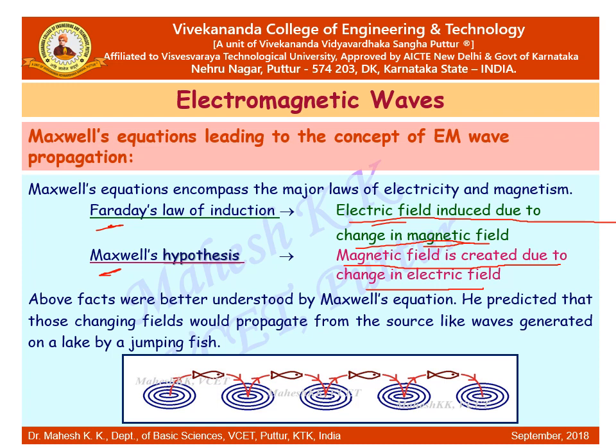Imagine a lake and a fish jumping in it. When the fish jumps into the lake, a wave is propagated. When the fish enters again at another point, another wave is generated. These waves propagate in the plane of the lake, but the fish jumps perpendicular to that plane. This is the understanding Maxwell proposed.